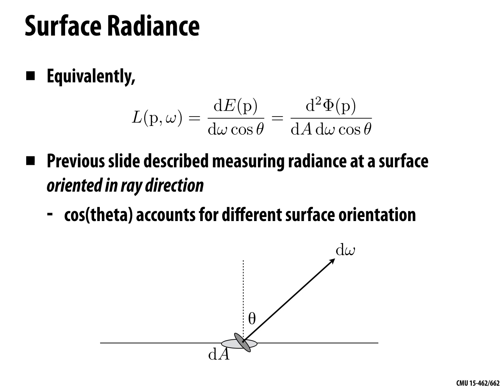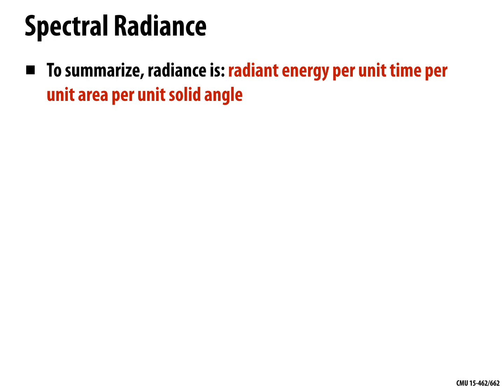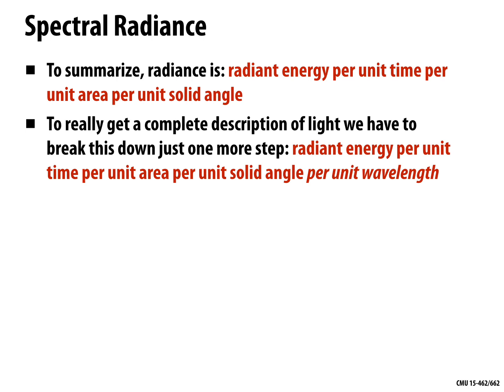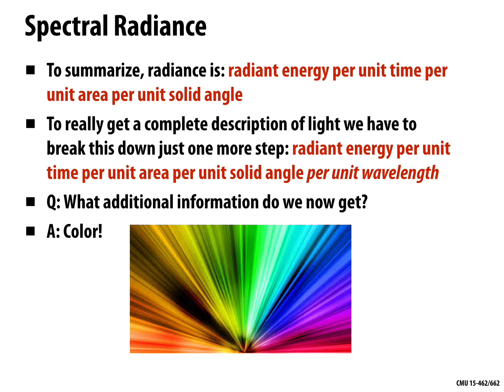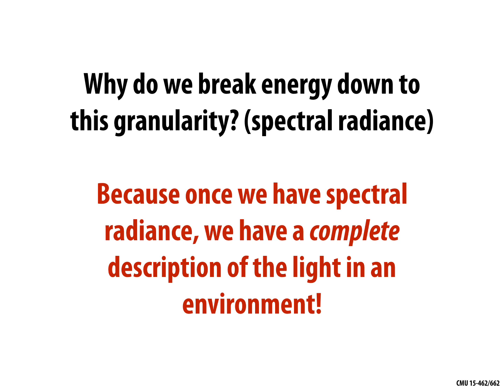Radiance is radiant energy per unit time, per unit area, per solid angle. To get a complete description of light losing no information, we break down one more piece: divide by wavelength to get spectral radiance — what color is the light at every point in every direction. Once we have spectral radiance, we have a complete description of light in an environment. If we know at every point, in every direction, over any area, over time, what the light looks like, we can reconstruct whatever image we want.